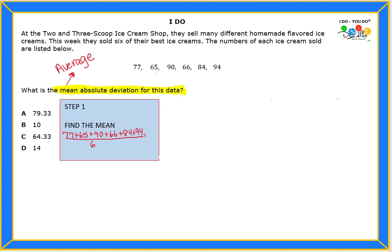If I add all my numbers I get 476 divided by six. I still need to divide by six. I just added all the numbers and when I get an answer I get seventy nine point three three, which means repeating decimal.